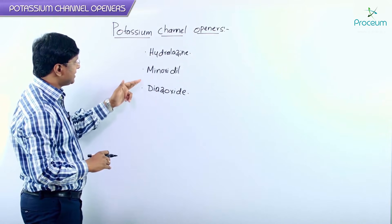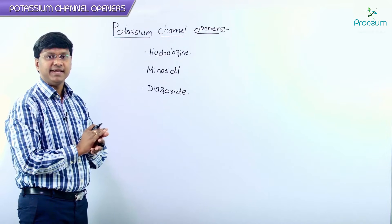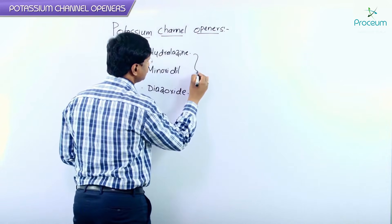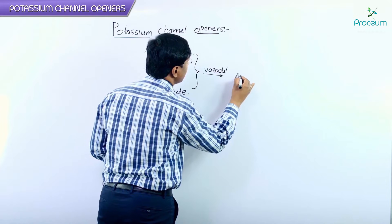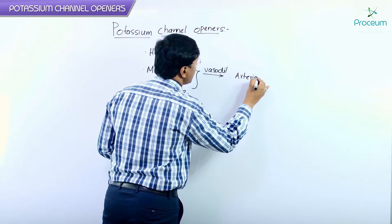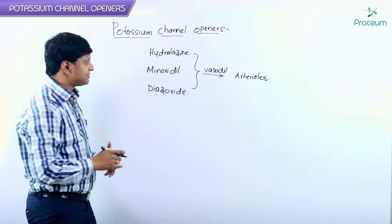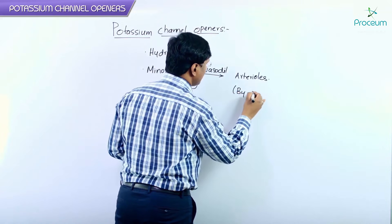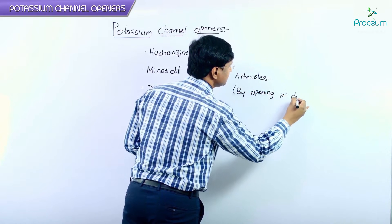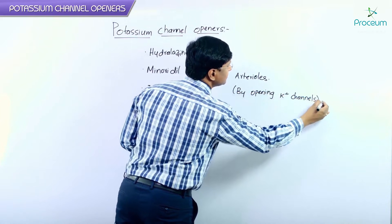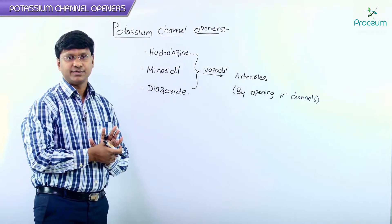These drugs — hydralazine, minoxidil, and diazoxide — they will cause vasodilatation mainly within the arterioles. How do they cause vasodilatation within the arterioles? By opening the potassium channels, they will cause vasodilatation within the arterioles.